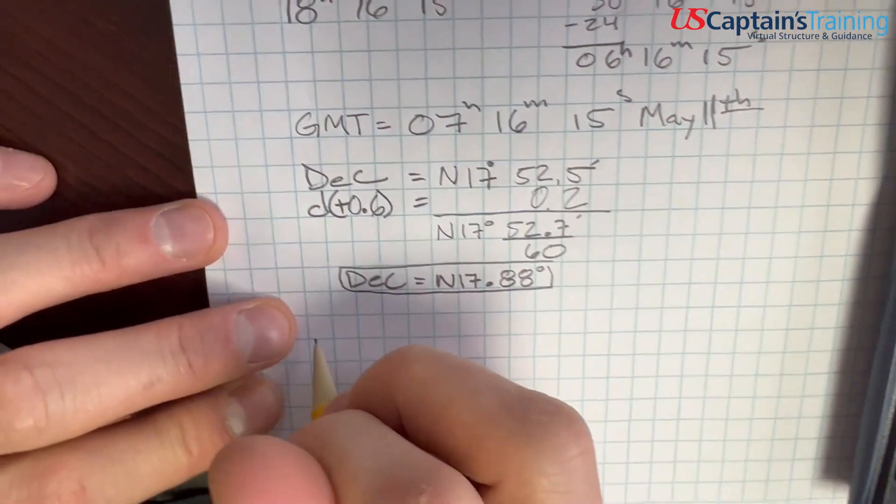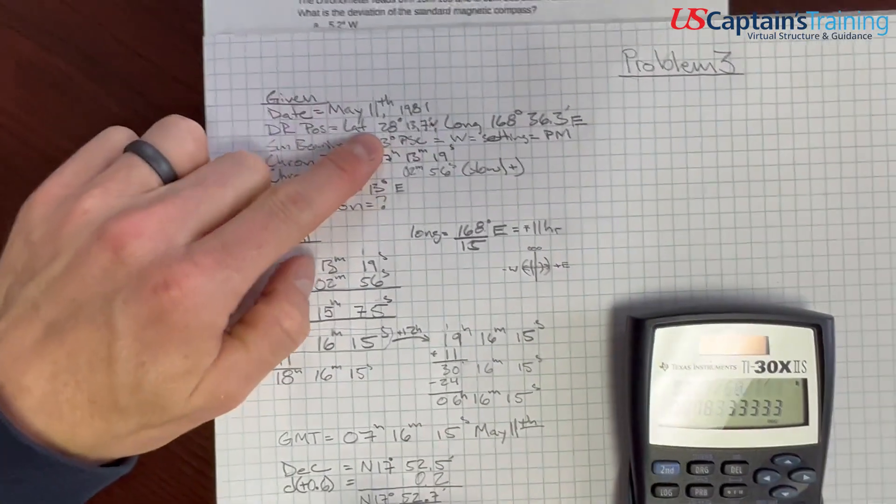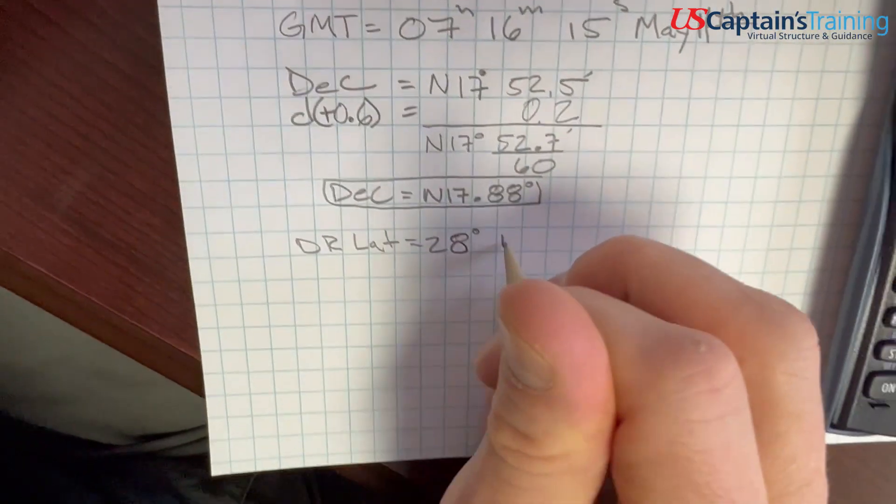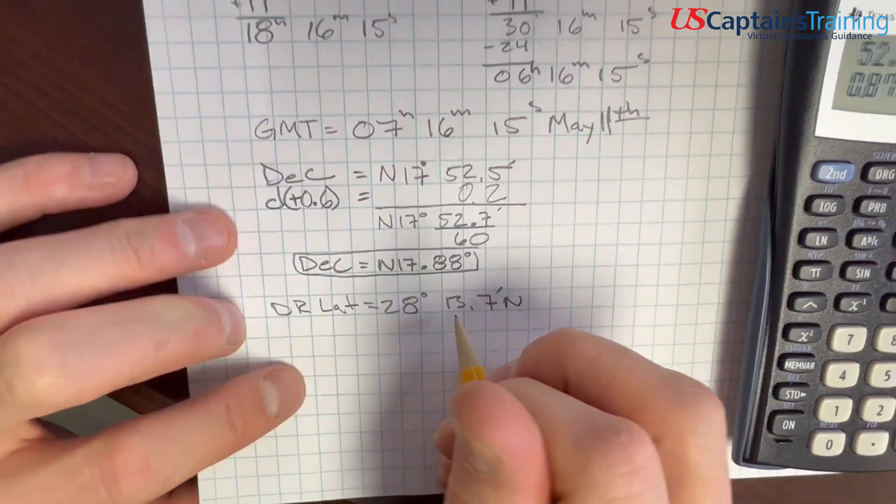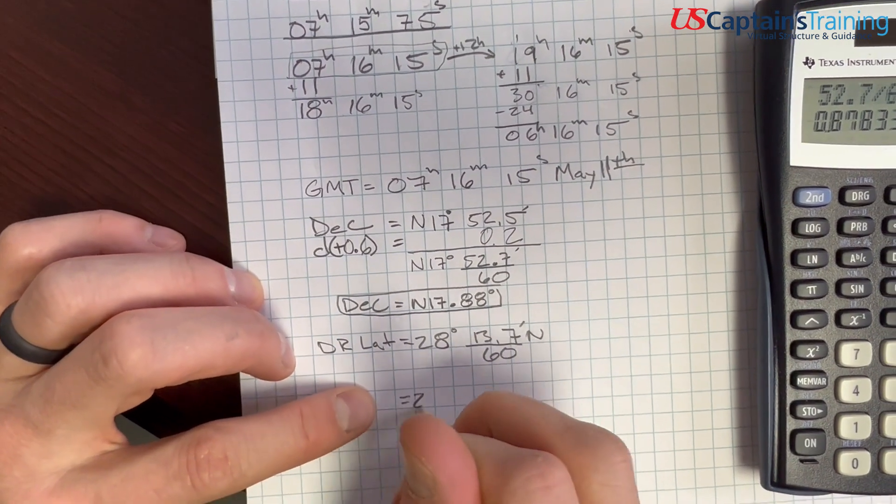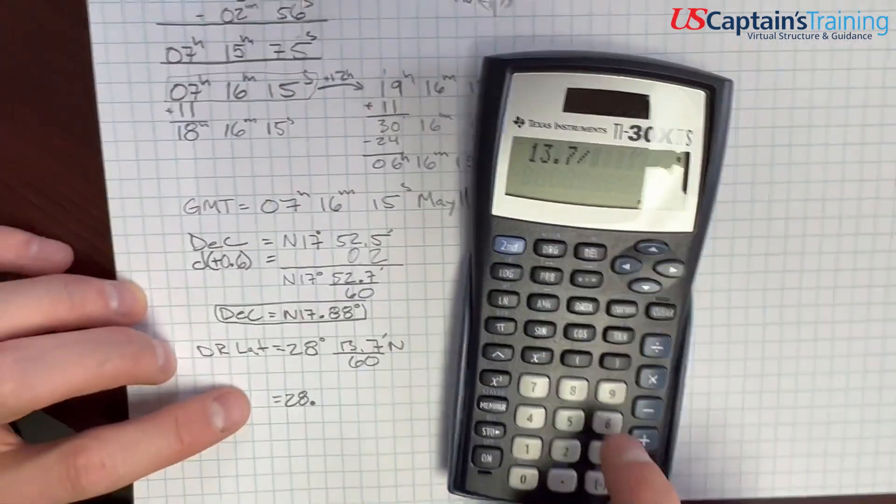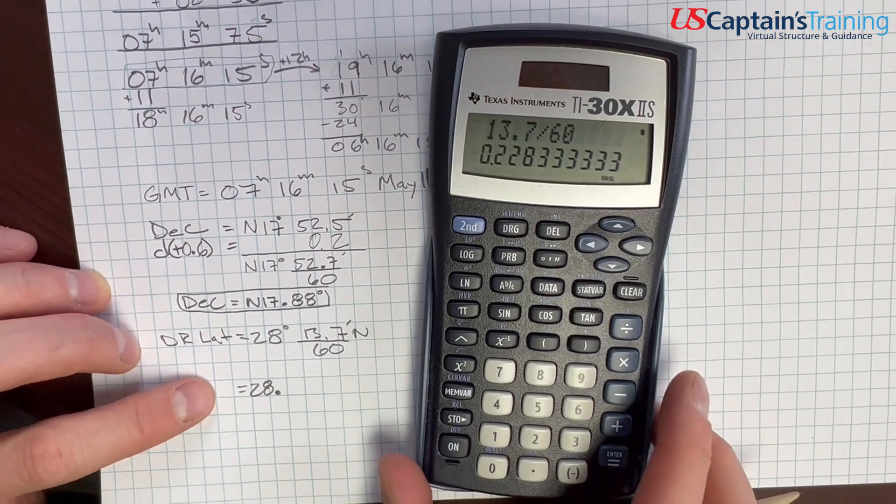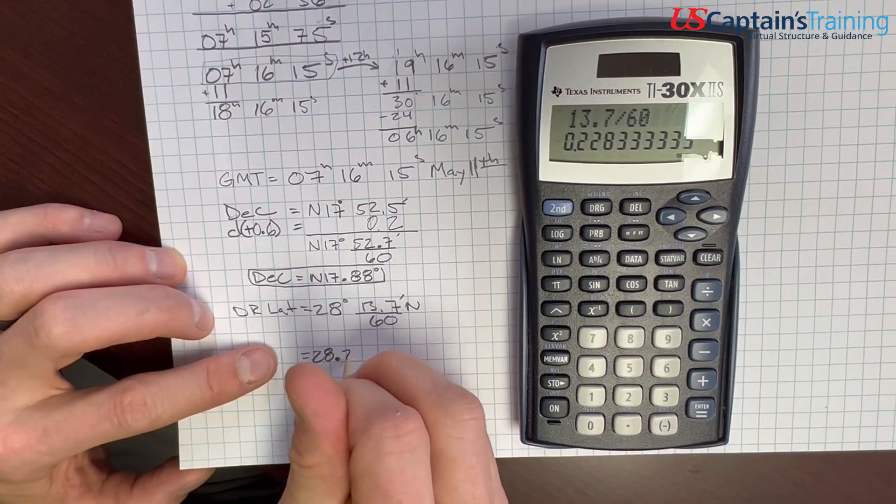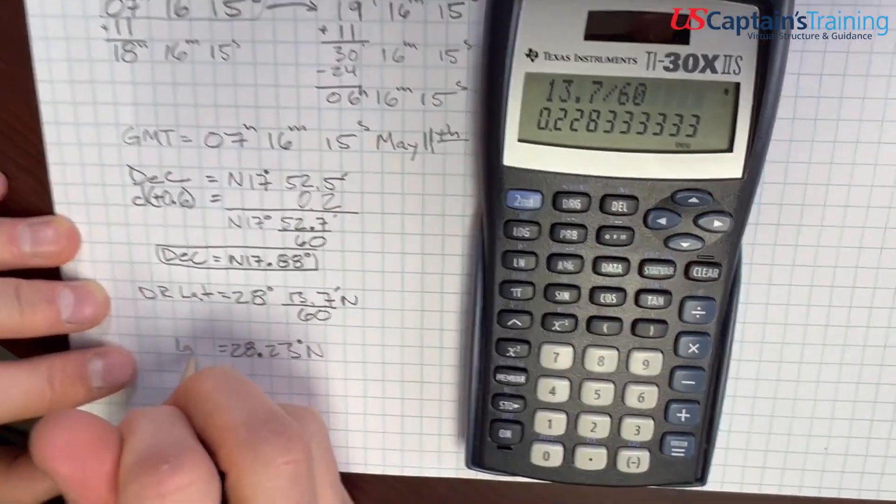And now we need our DR lat. Our DR lat equals 28 degrees 13.7 minutes north. Again, we need to turn this into degrees, so we divide by 60. 13.7 divided by 60 equals 0.23. So our DR lat is north 28.23 degrees. This is the latitude we're going to use.